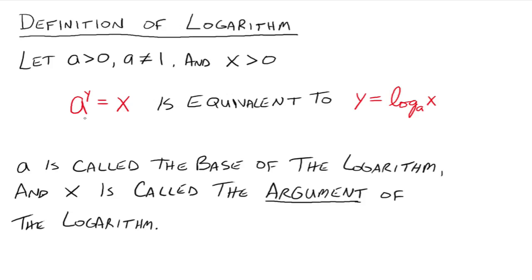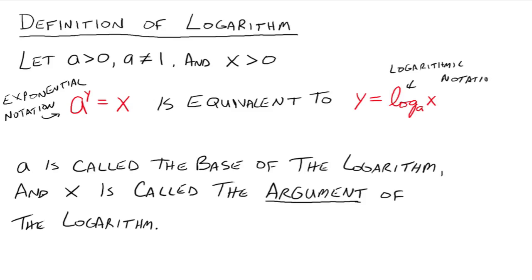We've got two types of notations. The one with a to the y equals x is called exponential notation. The one with the logarithm is called logarithmic notation. It's very important to understand how to take something written in exponential notation and rewrite it in logarithmic notation, and vice versa — be able to take something in logarithmic notation and rewrite it back in exponential notation.